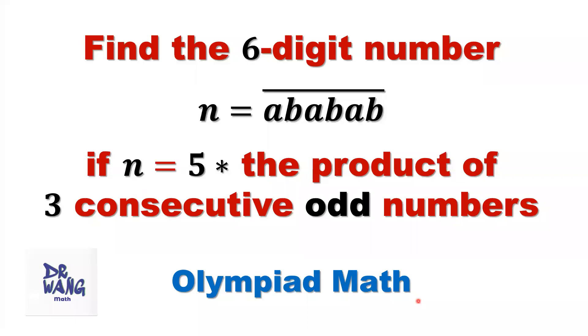Hello, everyone. I'm Dr. Wen. Here is the question. Find the six-digit number N equals ABABAB if N equals five times the product of three consecutive odd numbers. This is the given condition.